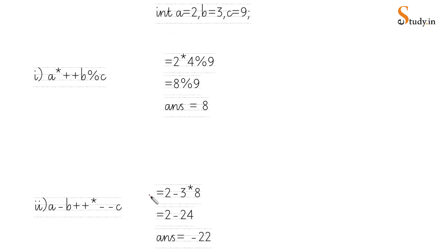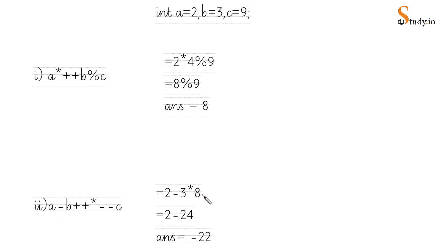Second example with a = 2, b = 3, c = 9: the expression is a - b++ * --c. Substitute a = 2. Since b++ is post-increment, we use the original value 3, then increment it. Since --c is pre-decrement, we decrease c from 9 to 8 before using it. So: 2 - 3 * 8. By operator precedence, multiplication first: 3 * 8 = 24. Then 2 - 24 = -22. The answer is -22.